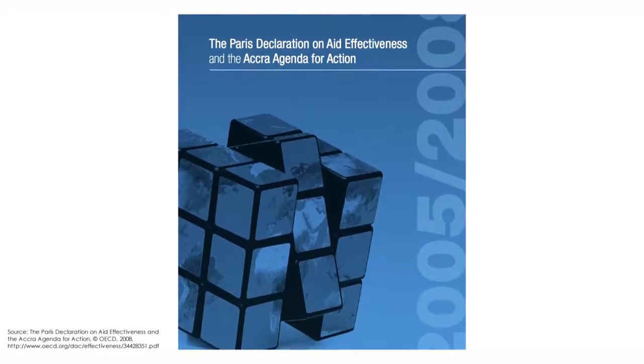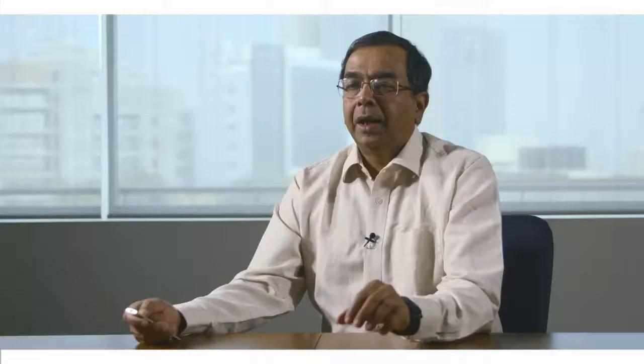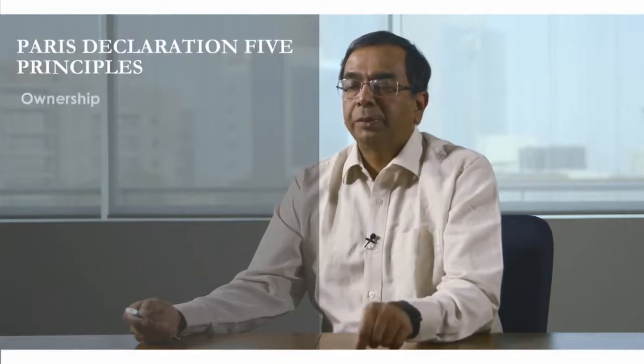Donors cannot set agendas which are not in the interests of recipient countries, and they must be accountable for the manner in which they conduct themselves. The Paris Declaration of 2005 defined the roles and responsibilities of donor organisations to promote aid effectiveness and enunciated five principles: ownership, alignment, harmonisation, managing for results, and mutual accountability. It's not just the countries which are accountable for the aid received — the donors too are accountable for the way they conduct their business in the countries.